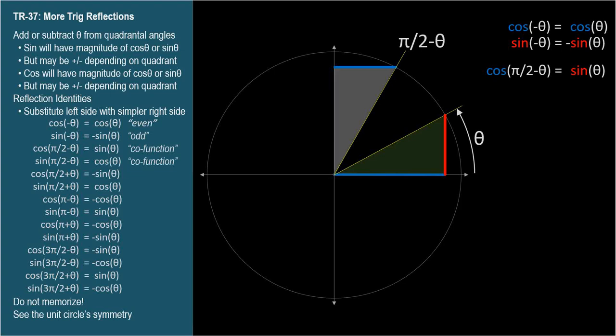Here's the sine of pi over 2 minus theta, which is the longer distance in the positive direction — it's the same distance as cosine theta. So sine of pi over 2 minus theta equals cosine theta. It's an identity, so it's always true; you can always simplify sine of pi over 2 minus theta to cosine theta.